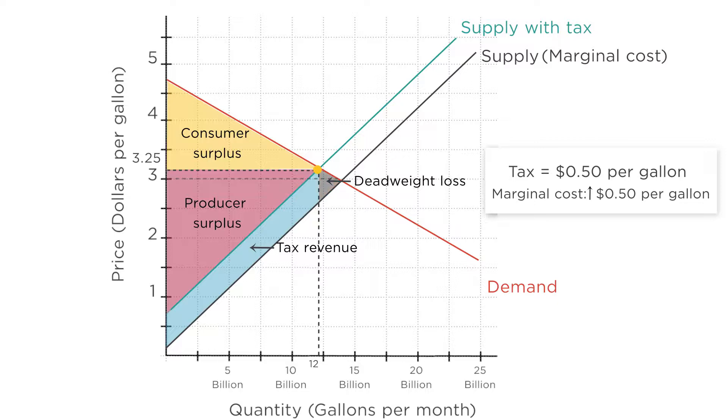But the tax stops those sales from happening, and in doing so reduces surplus and creates deadweight loss. For this reason, we say taxes in a competitive market are inefficient — they get in the way of efficient trades that make both sides better off.